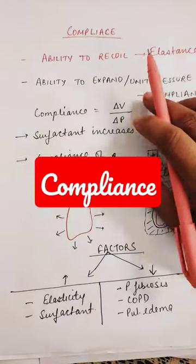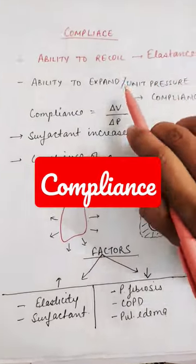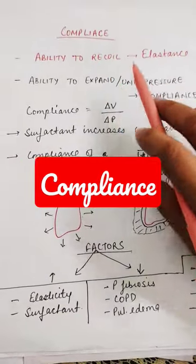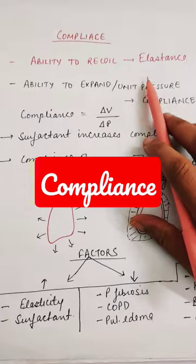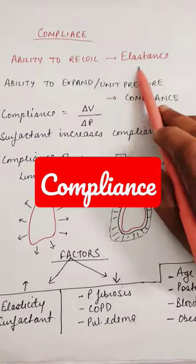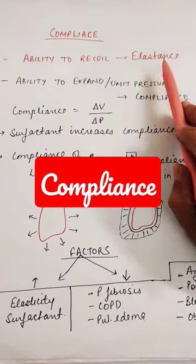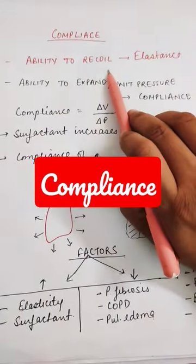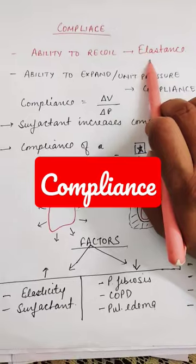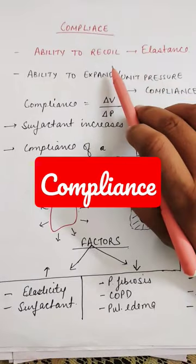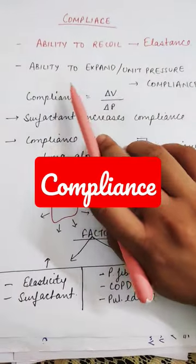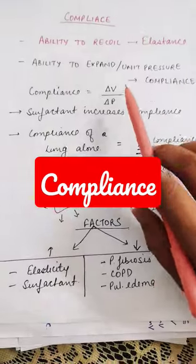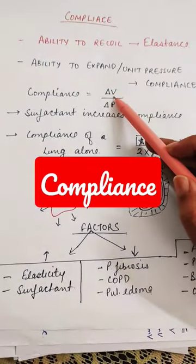Hi everyone. What is compliance? To understand compliance, we should know elastance. Elastance is the ability to recoil back. So vice versa, compliance is the ability to expand per unit pressure.